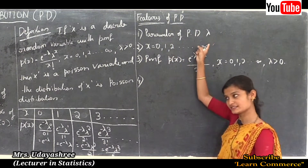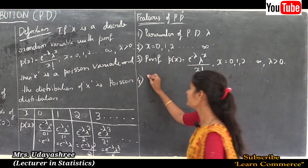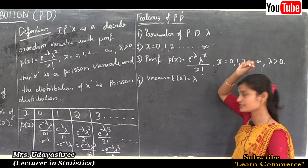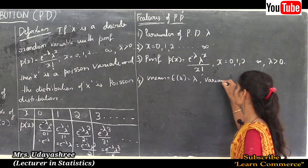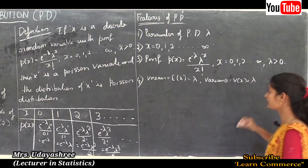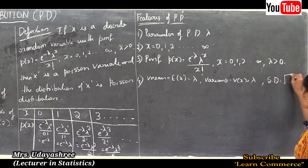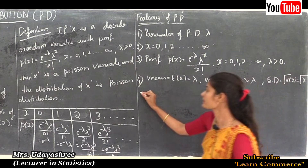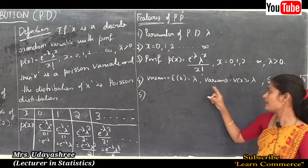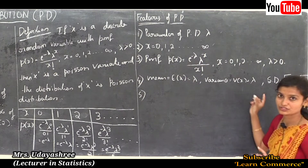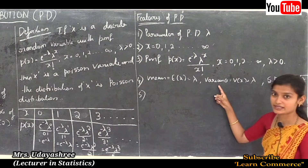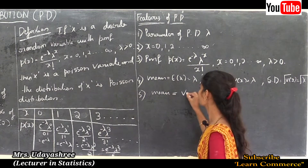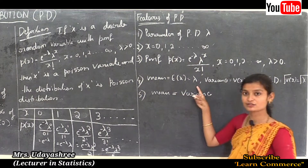The mean of Poisson distribution is lambda, because the parameter is lambda. The variance of Poisson distribution is also lambda, so V(x) = λ. The standard deviation is the square root of variance, which equals square root of lambda. The key relationship is that mean equals variance in Poisson distribution, since both equal lambda.